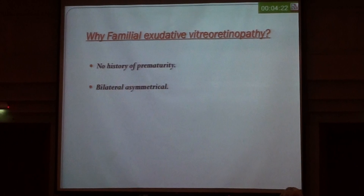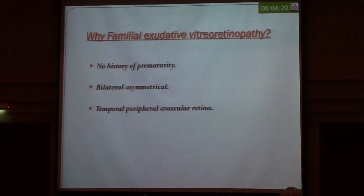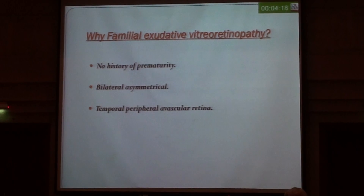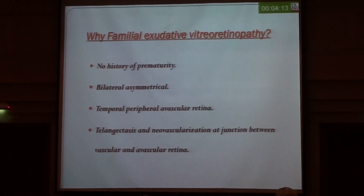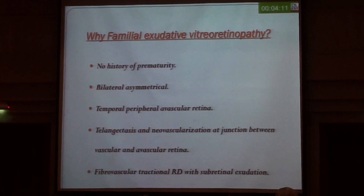So, FEVR — familial exudative vitreoretinopathy — is bilateral and asymmetrical, with temporal peripheral avascular retina, telangiectasis, and neovascularization at the junction between avascular and vascular retina, fibrovascular traction, and retinal detachment with sub-retinal exudation.